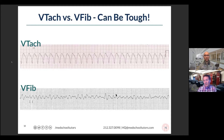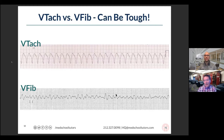V-fib, on the other hand, is anybody's guess — it's all over the place. It's going to be super jumbled, sometimes just a tiny squiggly line, but very frequently it doesn't have a monomorphic appearance. It is not going to be uniform throughout, and you can see variations happening all throughout that bottom image for V-fib.